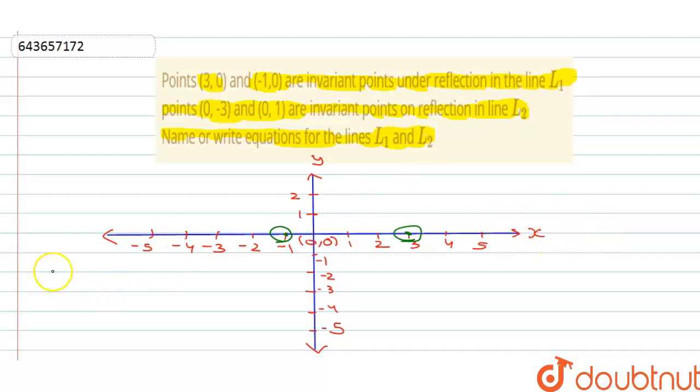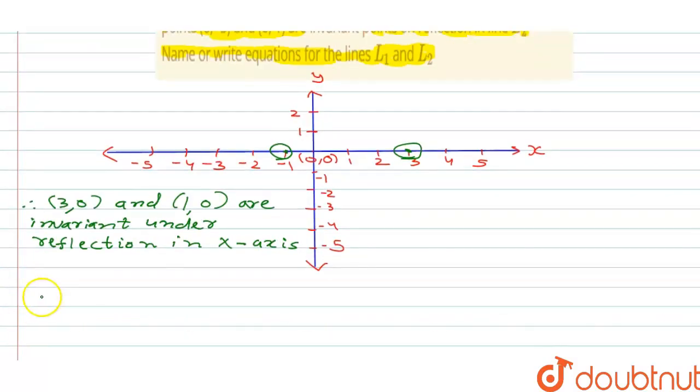That means we can say that therefore 3 comma 0 and 1 comma 0 are invariant under reflection of x axis. If it is on the x axis, so the equation of the line can be written as therefore equation of line L1 is y equal to 0. So this is equation of L1.